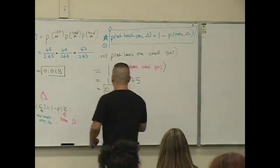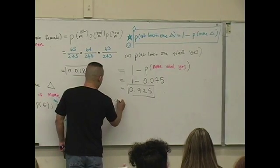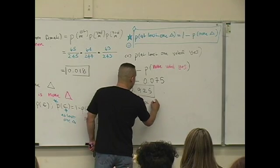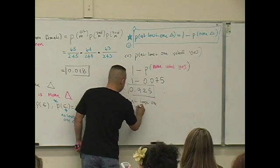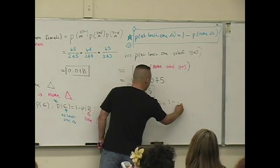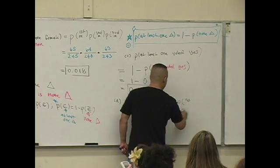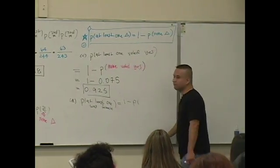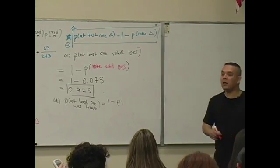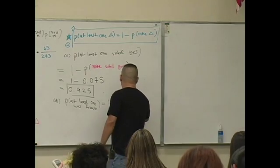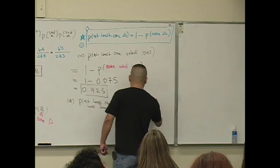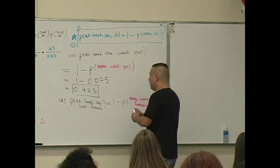D. What does D say? The probability at least one was who? Female. That's one minus the probability that what? What's the phrase? None were what? None were who? Female. None were female.